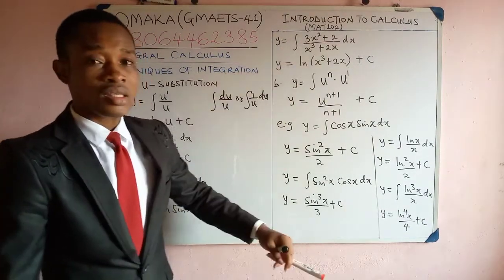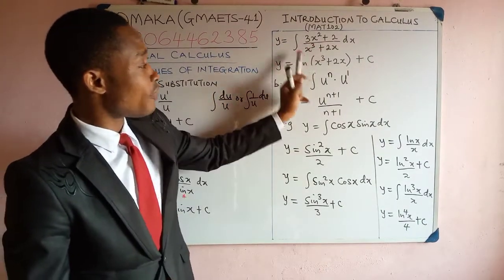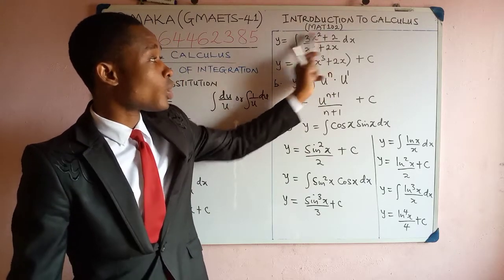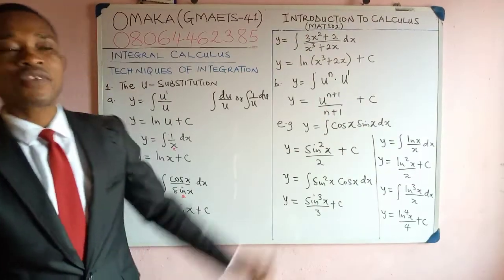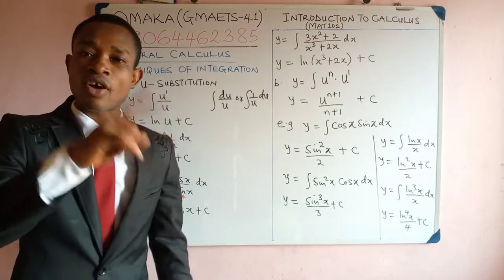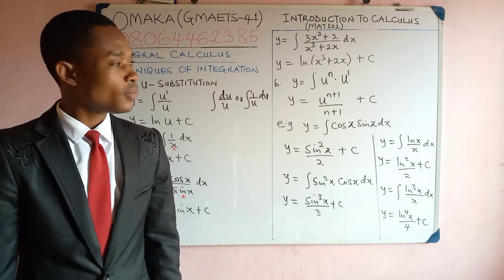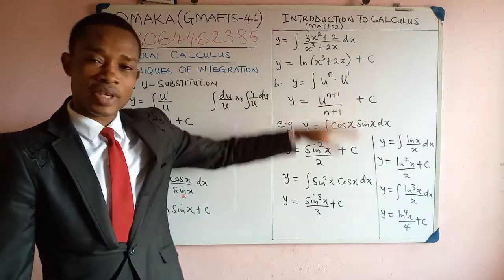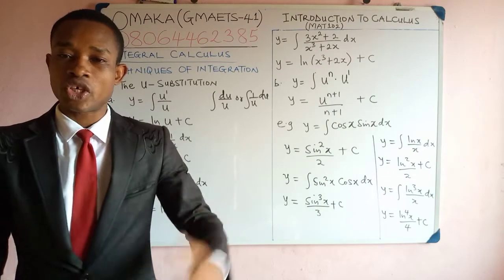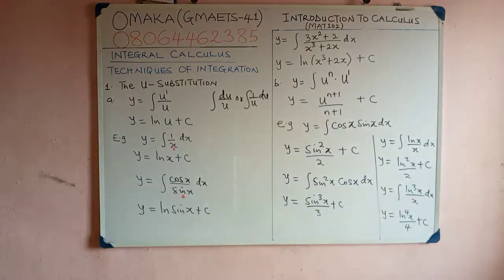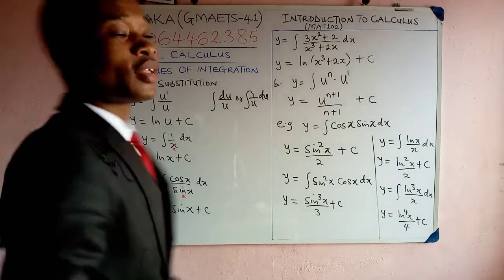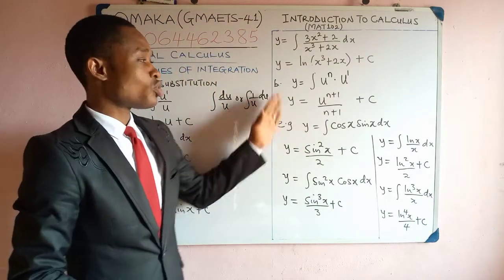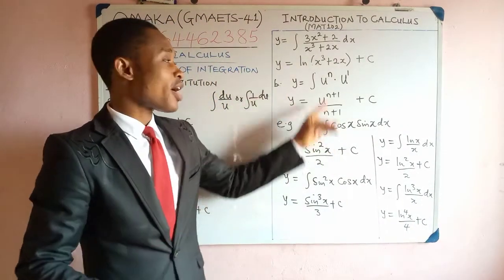Consider another example where the denominator is x-cubed plus 2x. If you differentiate it, you get 3x-squared plus 2, which is what you have in the numerator. Therefore, the result of this is simply ln of the denominator — that is, ln(x³ + 2x) plus c. When we come back, we are going to look at Case B for the product term.